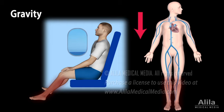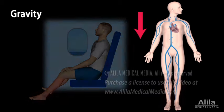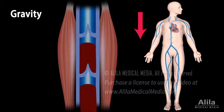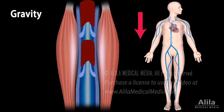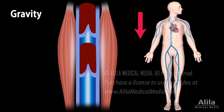Because the heart cannot pump more blood than it receives, cardiac output may decrease, sometimes to a dangerous level, and the person may faint. One can prevent this from happening by activating the skeletal muscle pump, either by keeping the legs moving or by tensing leg muscles periodically.